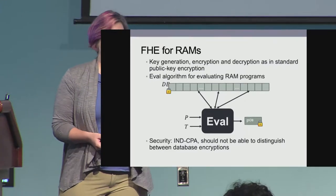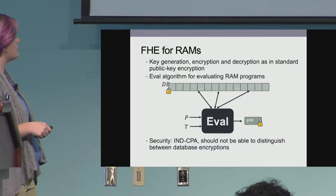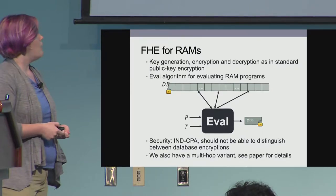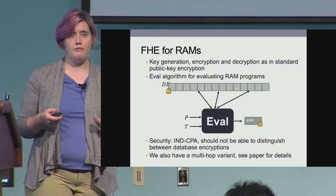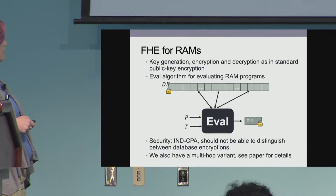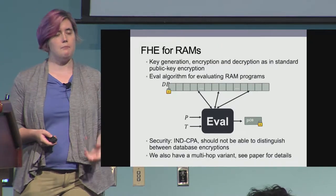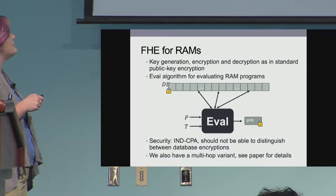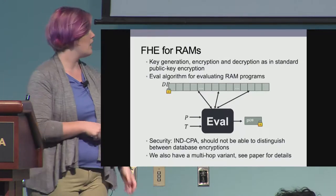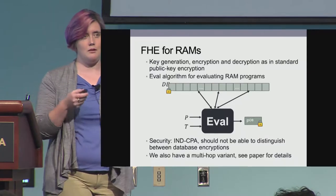Security is standard indistinguishability CPA. We should not be able to distinguish between two database encryptions, nor should evaluation give us any information to do that distinguishing. What I've shown here is our single hop FHE RAM paradigm, where essentially any program run for evaluation is run across the same database and updates are not made as part of the program. We also have a multi-hop variant which allows for updates to the database that can be folded into subsequent RAM executions. I will be focusing primarily on the single hop version today.